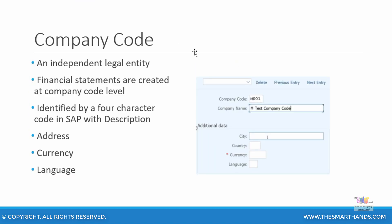The most important organizational unit in financial accounting is the company code. You can put up to a maximum of four characters — for example, M001 — but you can use any combination of alpha and numerical characters. It is an independent legal entity registered with your country's financial organizations, and financial statements like your balance sheet and profit and loss statements are created at a company code level. When you create a company code in the system, you will specify a four-character ID, a company name, the city, country, currency, and language.